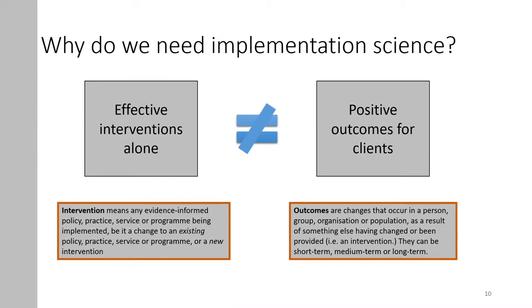By intervention, we mean any evidence-informed policy, practice, service or program being implemented. Outcomes are changes that occur to a person, group, organization or population as a result of something being changed — an intervention. These can be short-term, medium or long-term outcomes. We will learn more about outcomes later.